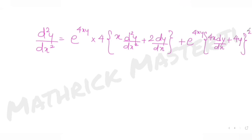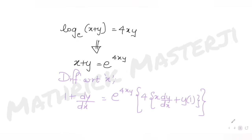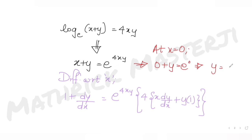Now the question asks us to evaluate at x = 0. First, let's find y at x = 0. Putting x = 0 in x + y = e^(4xy): we get y = e^(4·0·y) = e^0 = 1. So at x = 0, y = 1.